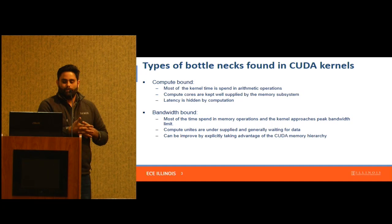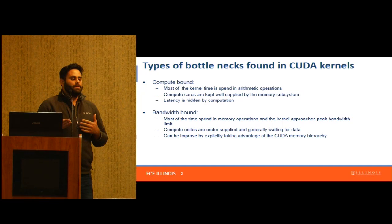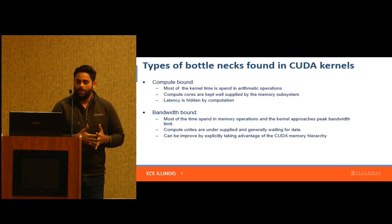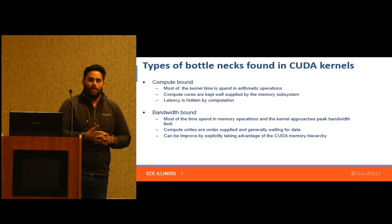The next one is bandwidth bound kernels. This is what happens when most of the time is really being spent in memory operations trying to get data from global memory, and your compute units are basically undersupplied — they're all waiting for data. This usually happens when you have naive kernels.